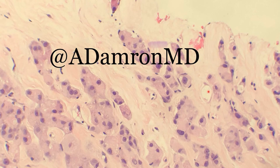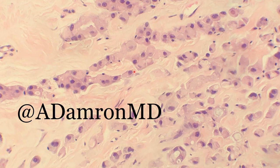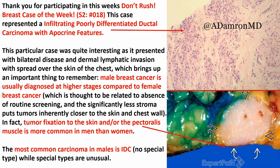Indeed this was a poorly differentiated ductal carcinoma with apocrine features, and I wanted to use this case to talk about male breast cancer in general. This case was very interesting because it presented with bilateral disease and dermal lymphatic invasion, and had spread over the skin of the chest. Male breast cancer is generally diagnosed at higher stages compared to female breast cancer. One reason is that we don't really screen for male breast cancer like we do female — men don't get annual mammograms. By the time these masses are picked up, they've had more time to grow and become worse. Also, male breasts are generally smaller than female breasts, which means that a mass in a male breast is inherently closer to the skin and the chest wall.